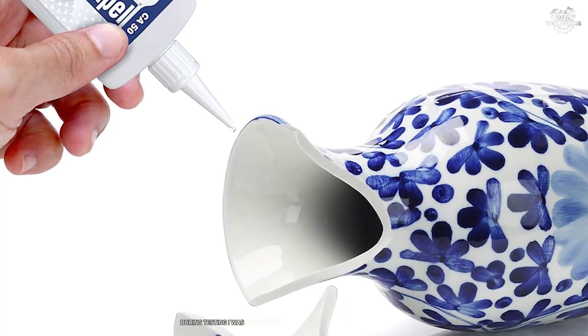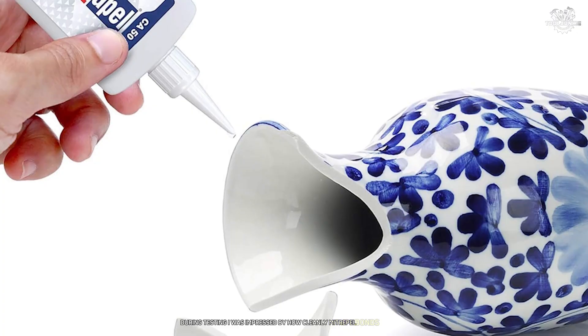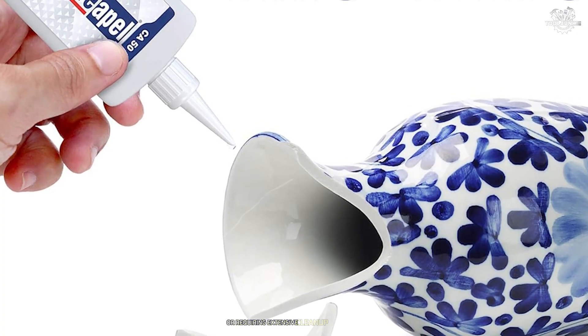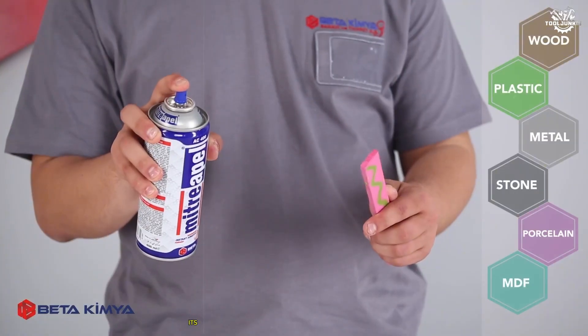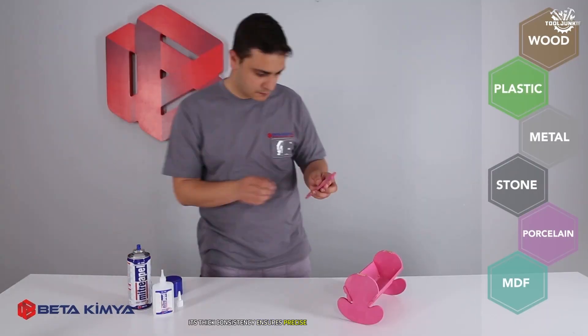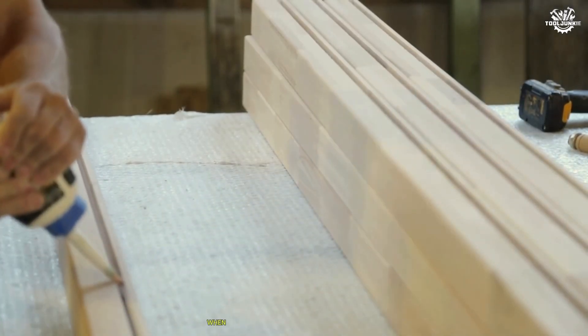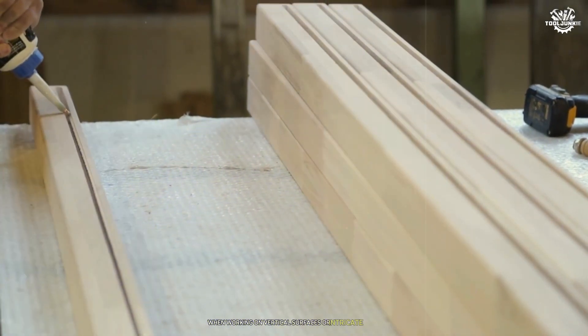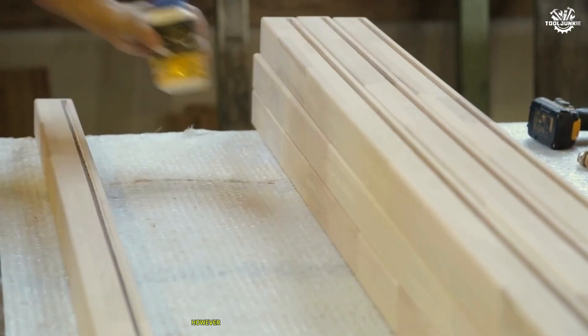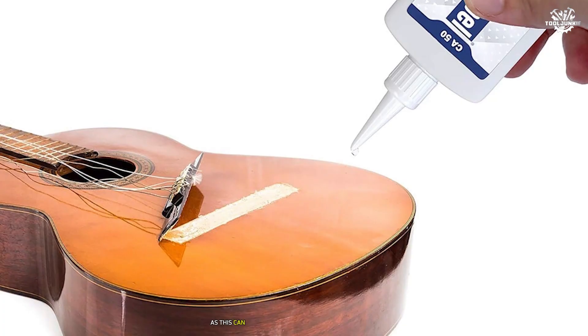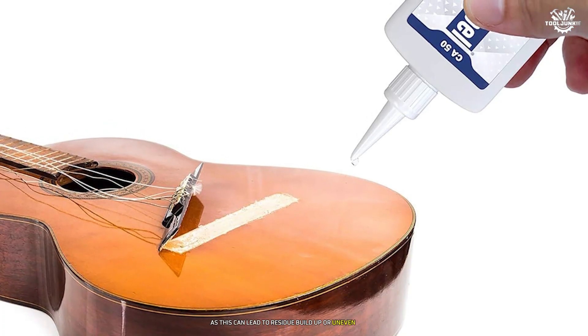During testing, I was impressed by how cleanly MITRE Pell bonds surfaces without leaving excessive residue or requiring extensive cleanup afterward. Its thick consistency ensures precise application without running or dripping, a significant advantage when working on vertical surfaces or intricate parts. However, care must be taken not to overuse the activator spray, as this can lead to residue buildup or uneven curing.